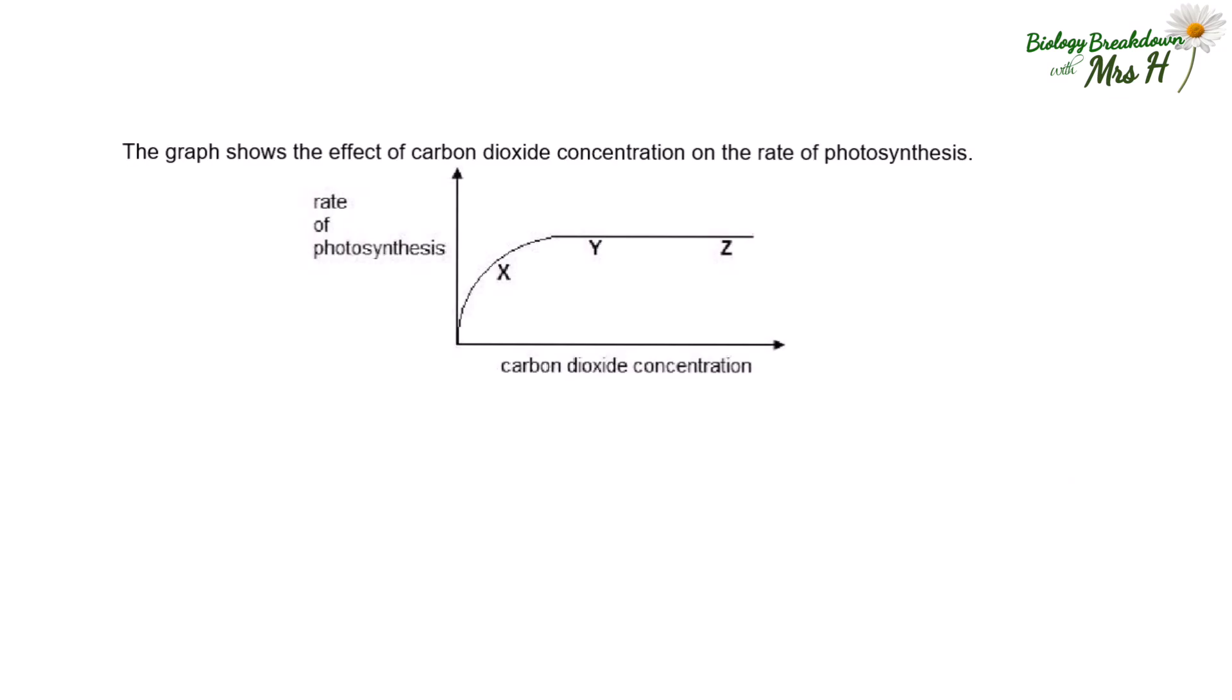Let's have a go at an exam question on this. Notice the x-axis this time is carbon dioxide concentration. So what is limiting the rate of photosynthesis at part x? Carbon dioxide concentration? How can we tell? Well, as you increase carbon dioxide concentration, the rate of photosynthesis also increases.